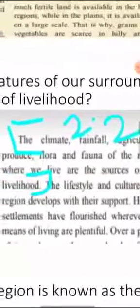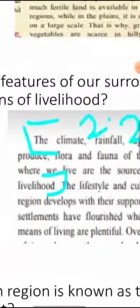Now, 2.2: what features of our surroundings form the means of livelihood? The answer is on page number 2. Write down 2.2. The climate trend for agricultural produce forms the means of livelihood.